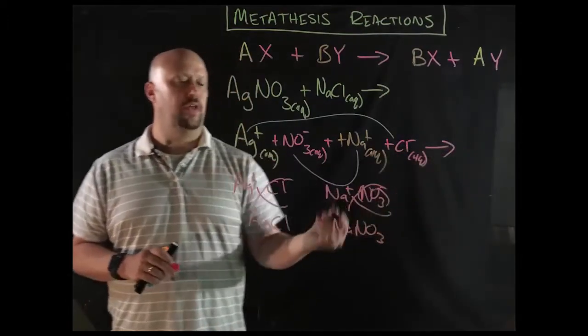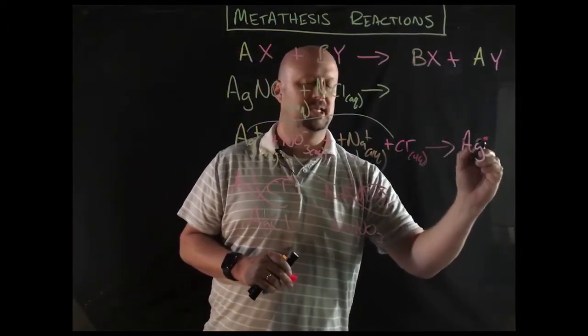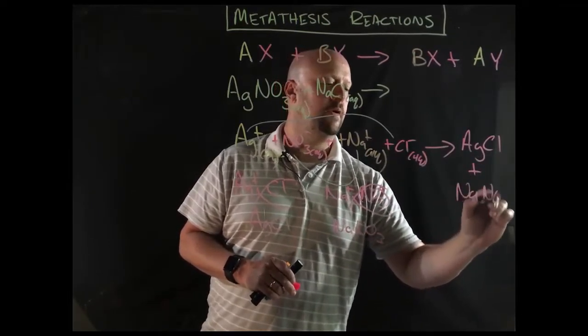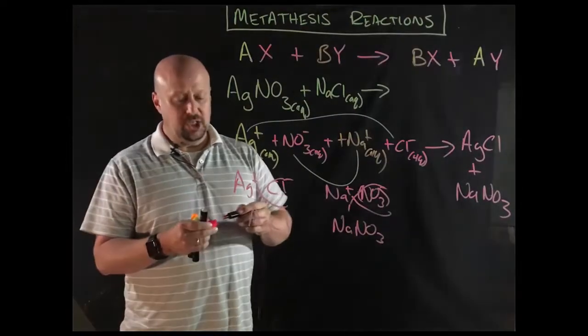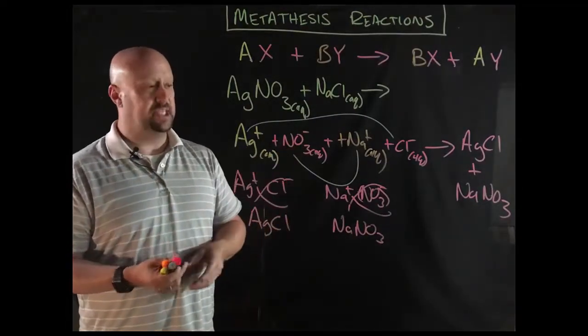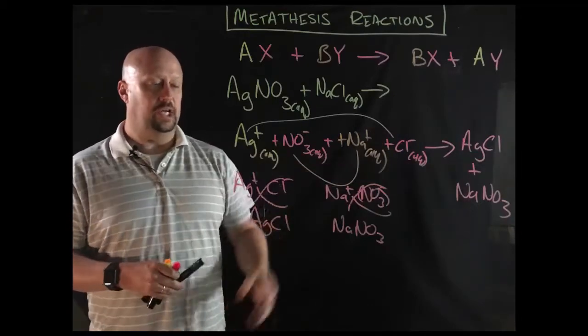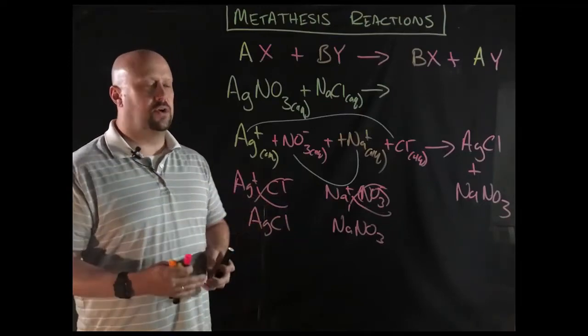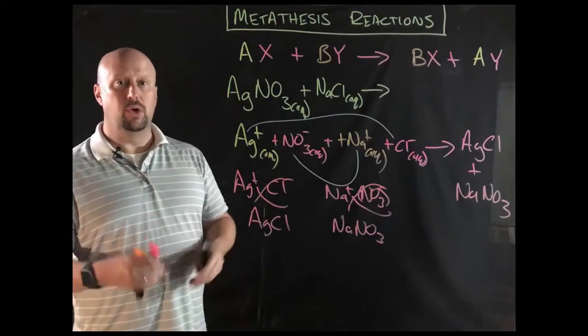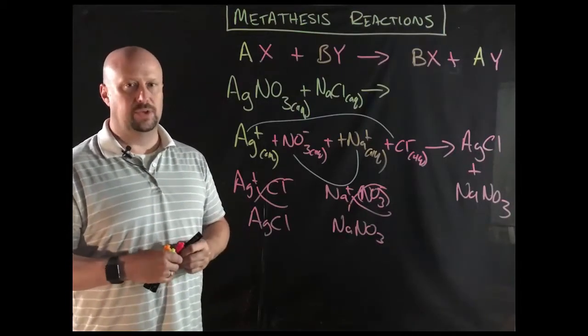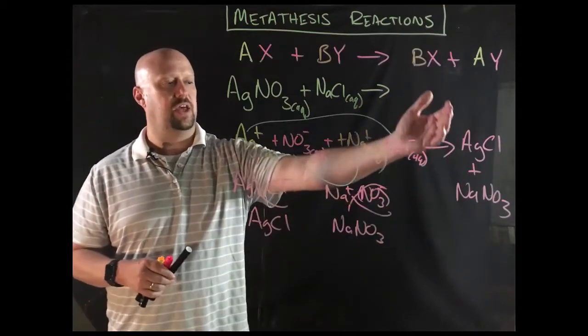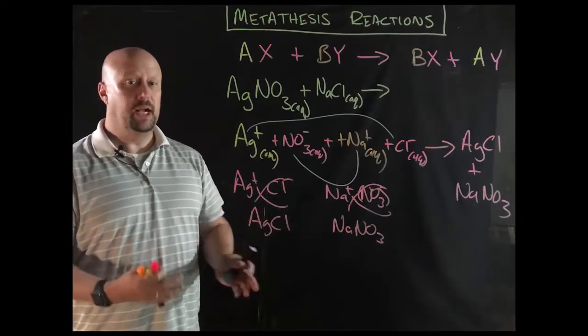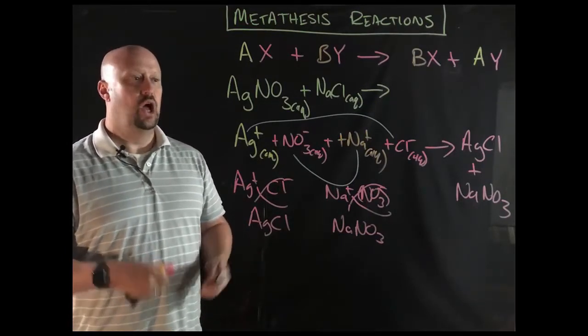So we would write those over on this side of the equation. Plus sodium nitrate. Now, actually, we're not done because what is necessary in this case is that we not only find the products, which I did. We crisscrossed things, got our products, everything looks great. But you would then have to consult a chart of solubility rules or, better yet, know your solubility rules to figure out are these two products, are they then aqueous or are they solid? In other words, do we get a precipitate out of this? Is this a precipitation reaction or do we get nothing?